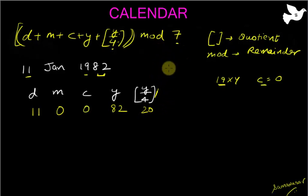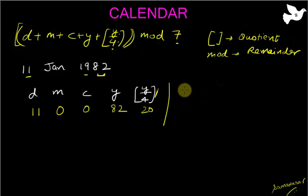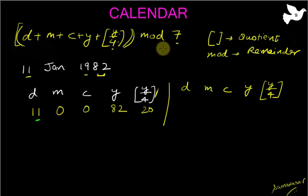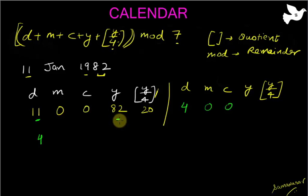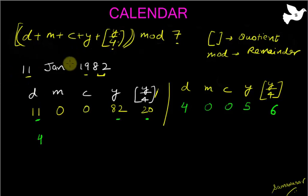Now I take the modulus of 7 for all these numbers individually. The remainder when 11 is divided by 7 is 4, so I put 4. Zero divided by 7 leaves remainder 0. Zero divided by 7 leaves remainder 0. 82 divided by 7 leaves remainder 5. And 20 divided by 7 leaves remainder 6. So now I have all my numbers.